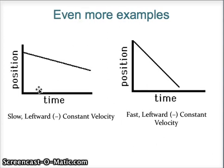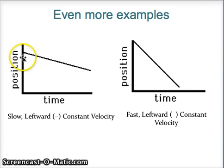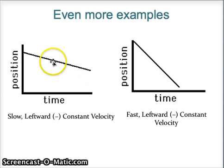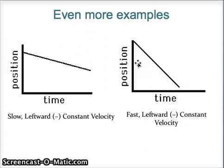Another example shows negative velocity. Negative doesn't mean slower — it just means moving in the negative direction. If the graph has a negative slope, the car is moving in the negative direction. The left graph has a less steep negative slope — constant speed in the negative direction, but not very fast. The right graph has a much steeper negative slope, so it's moving faster toward the left at constant velocity.